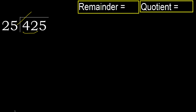25 multiplied by 2 is 50, which is greater. Multiply by 1: 25 is not greater, ok. Subtract: 42 minus 25 is 17.